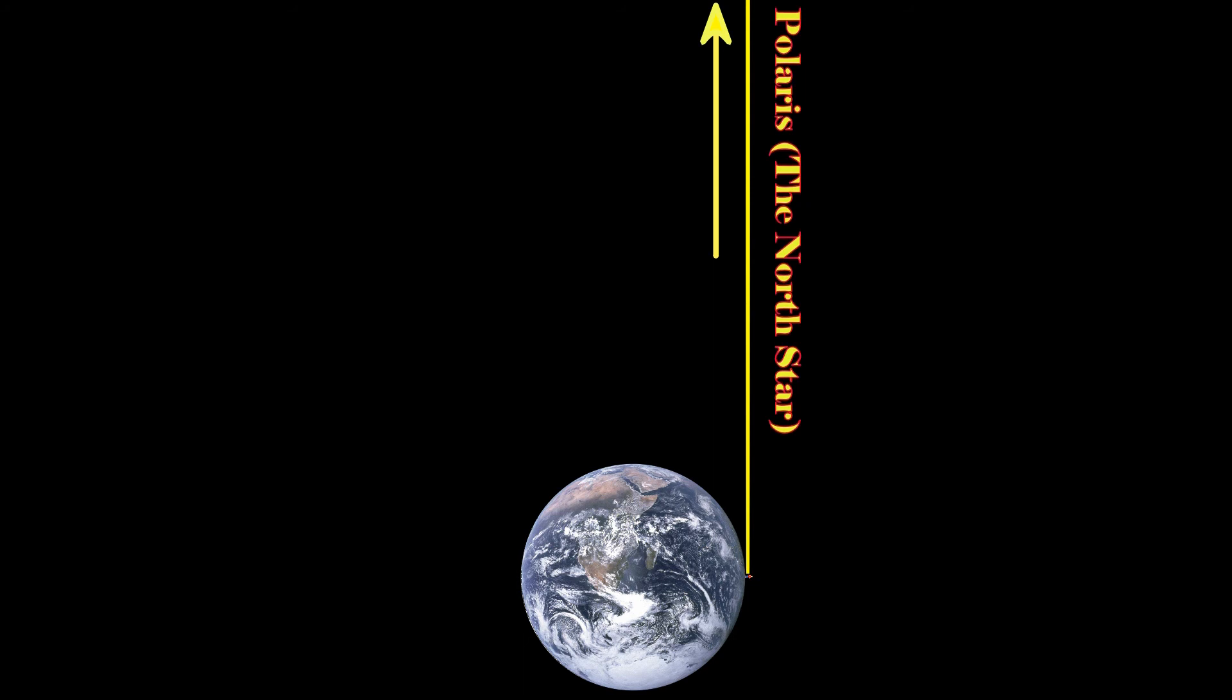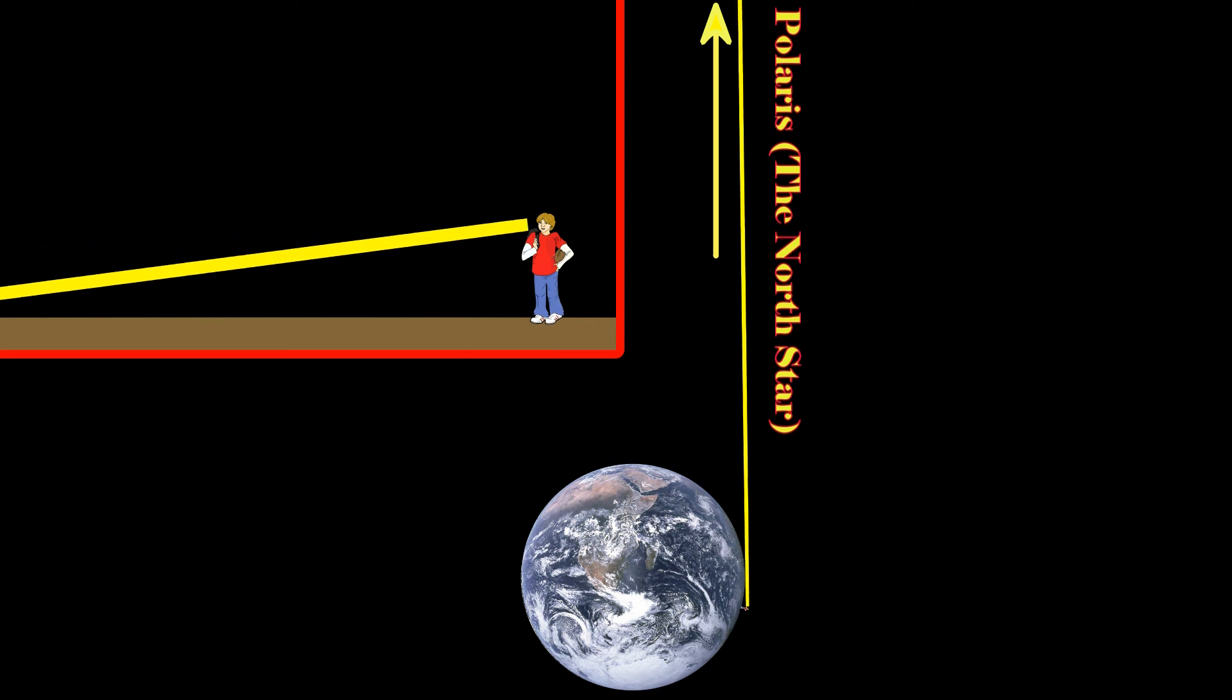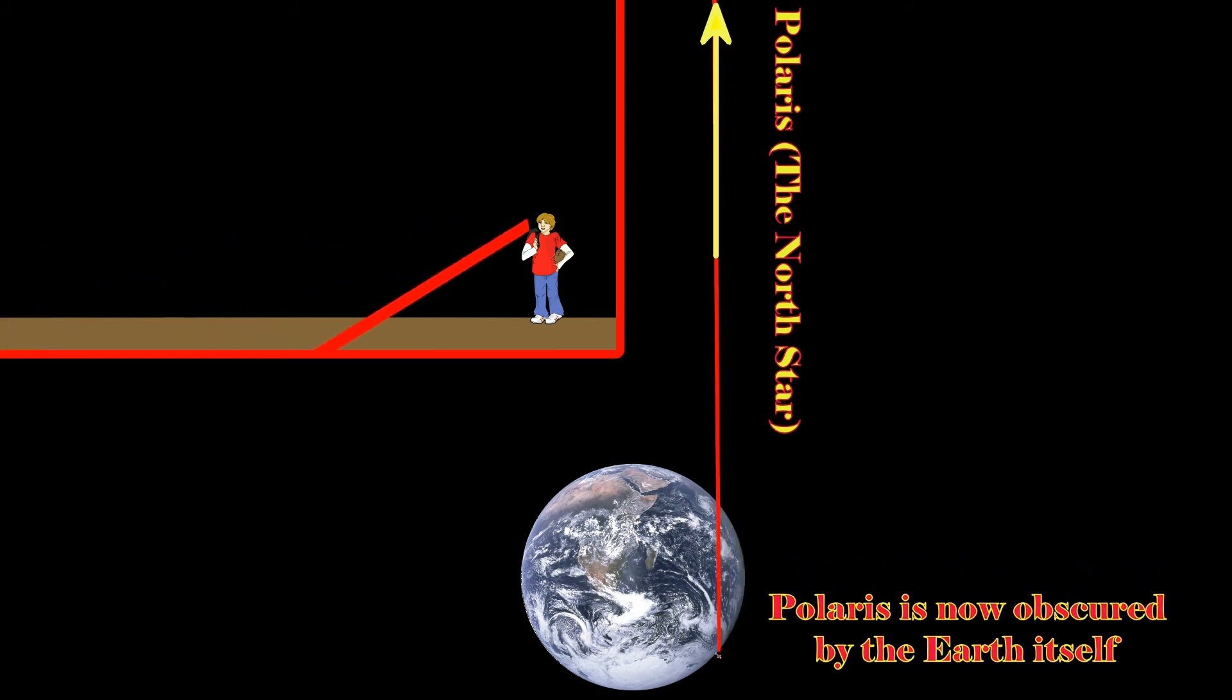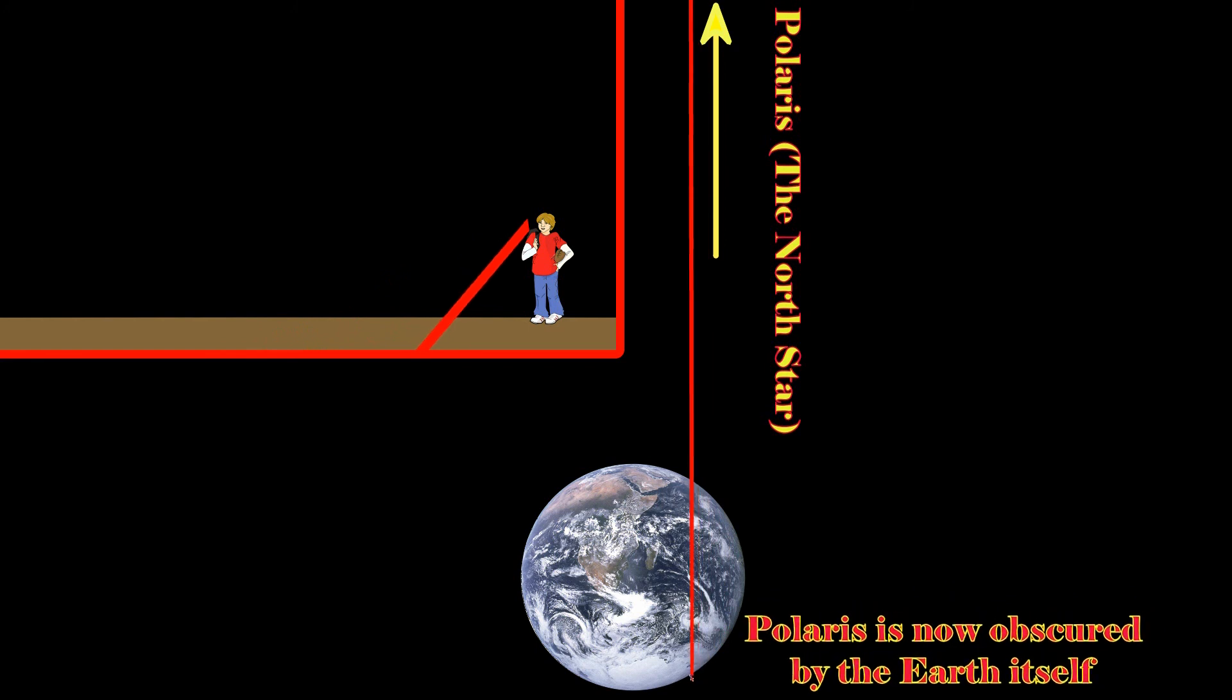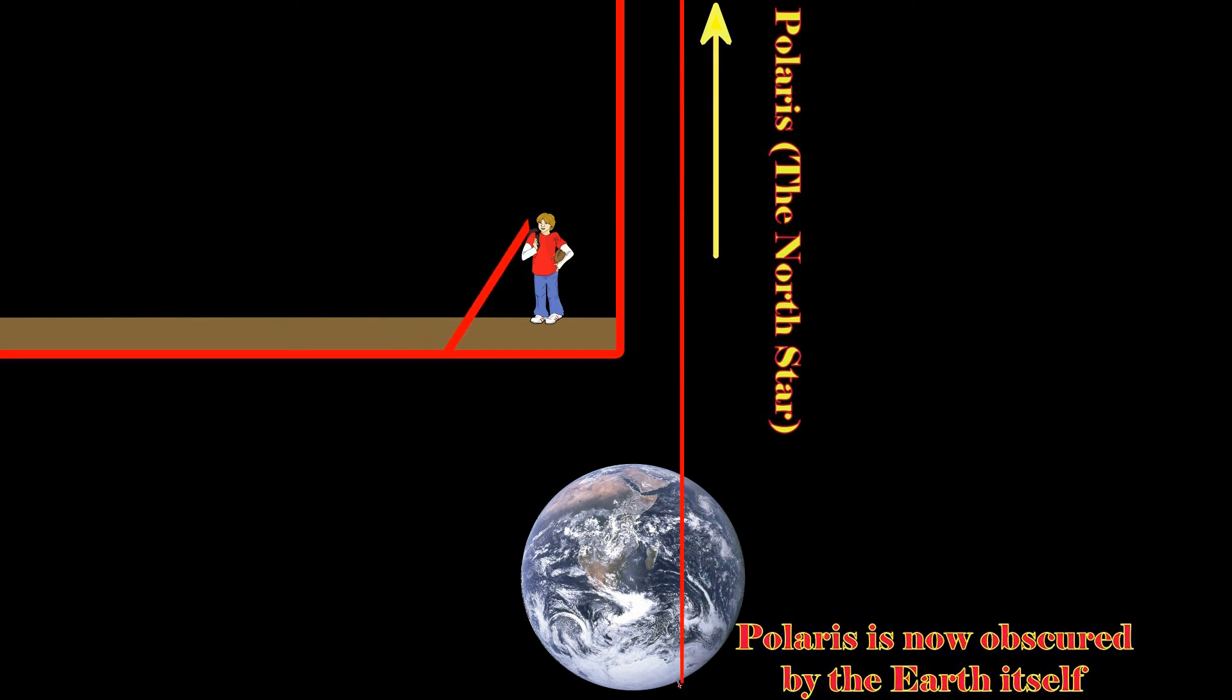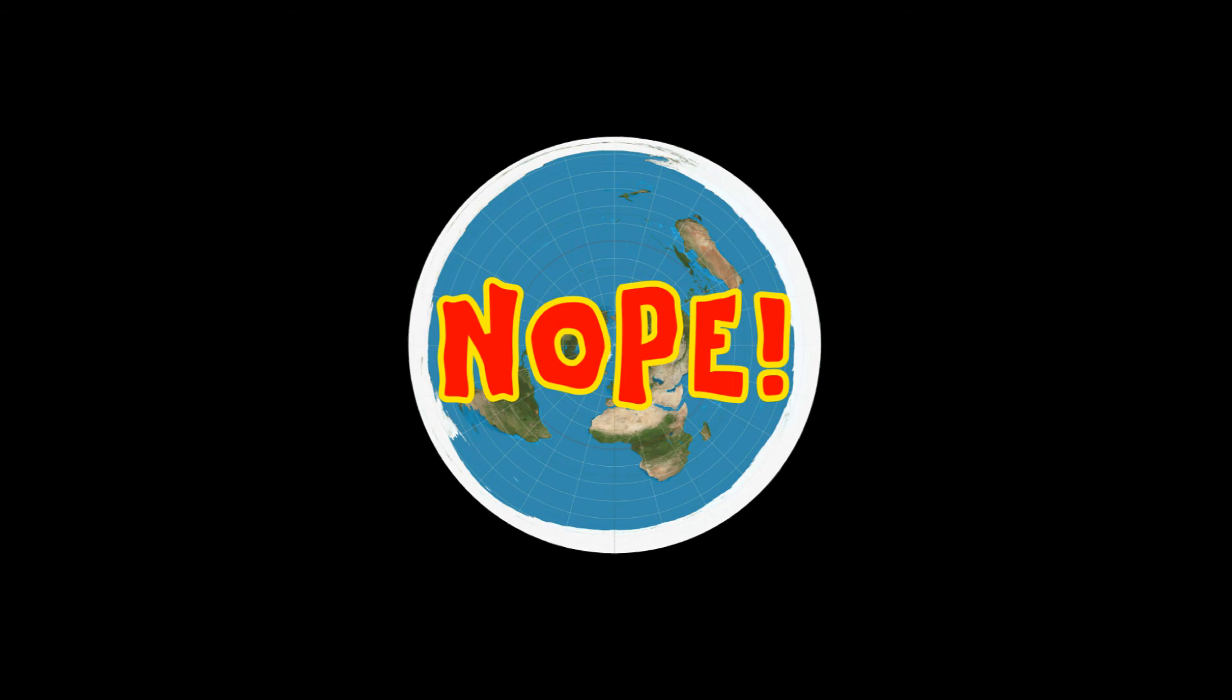Now, as they go south, look what happens. Polaris goes lower and lower from their perspective because of the shape of the Earth. It's simple. It's just so simple. You guys are twisting reality to make it fit what you want it to be, but that's not how it works. It is what it is.